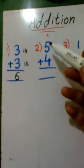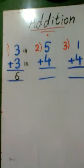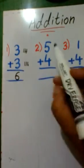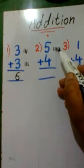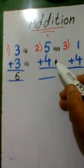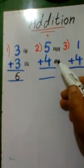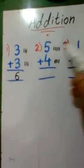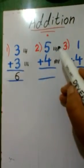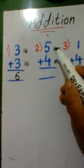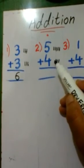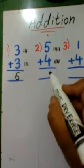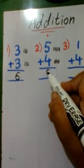Q2: 5 plus 4. We draw 5 lines for 5 and 4 lines for 4. Now we count all lines: 1, 2, 3, 4, 5, 6, 7, 8, 9. 5 plus 4 is equal to 9.